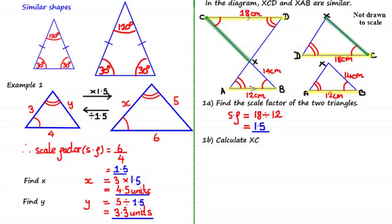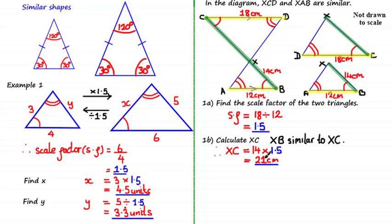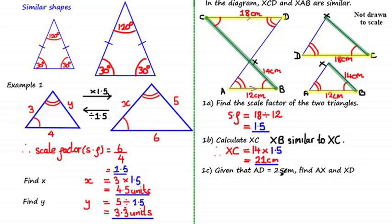To determine which side is similar to XC, it's helpful to redraw the shapes. We've left the lower triangle as it is and redrawn triangle XCD by separating it from the shape below and rotating it. By comparing the shapes, you should be able to see that side XB is similar to XC. So we multiply XB, which is 14 centimeters, by the scale factor of 1.5 to get XC equals 21 centimeters. I'd always recommend checking by applying what you know about angles or by drawing the shapes in a different position.